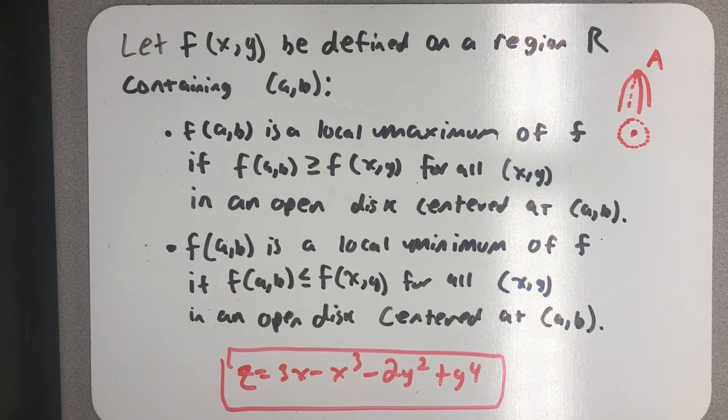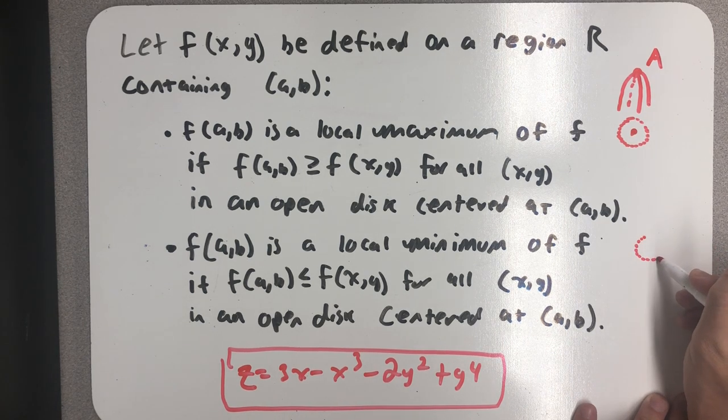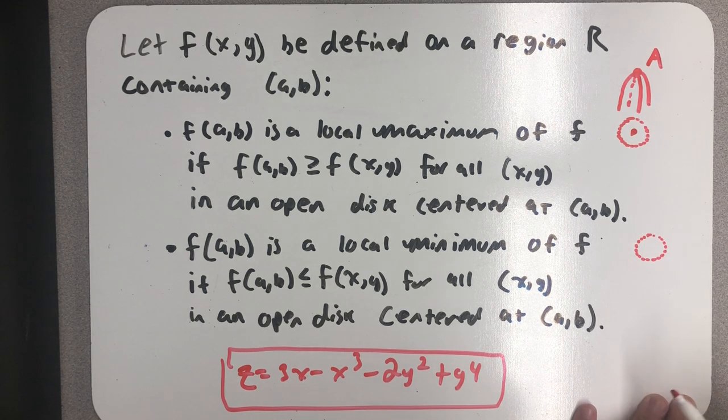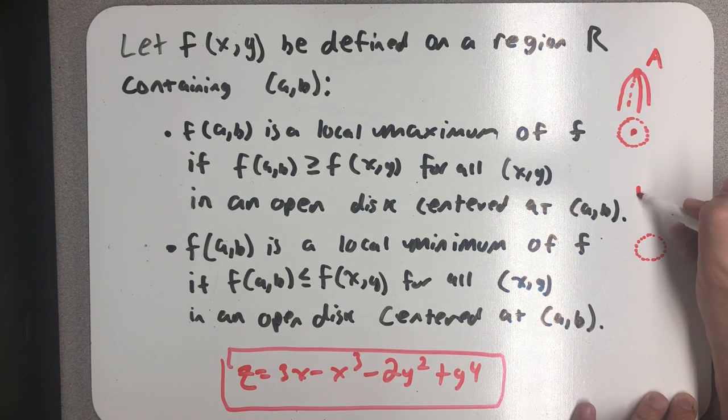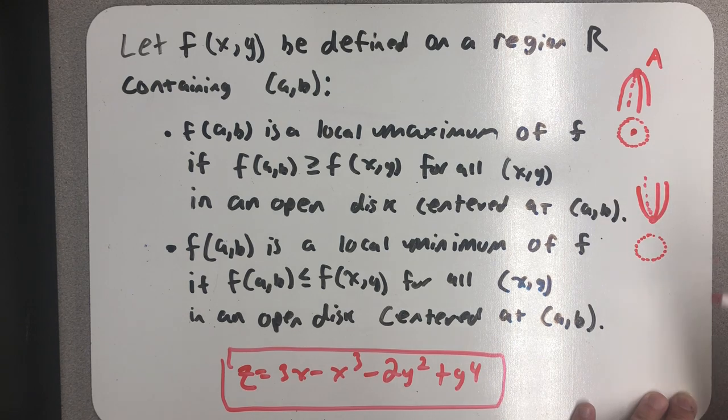Just like that, f(a, b) is called a local minimum of f if that z-value, f(a, b), is less than or equal to f(x, y) for every single x, y in an open disk centered at (a, b). So the similar idea, you take a disk in the domain, and here, if you look at all of the z-values, you get a low point.